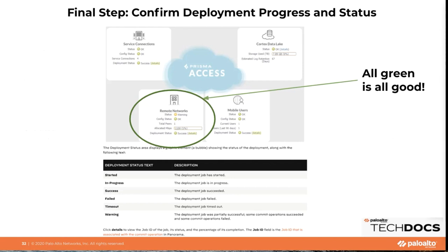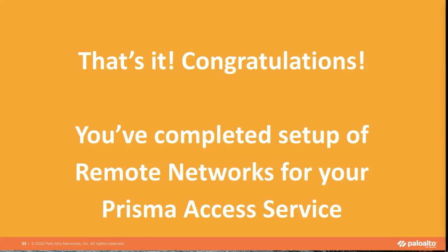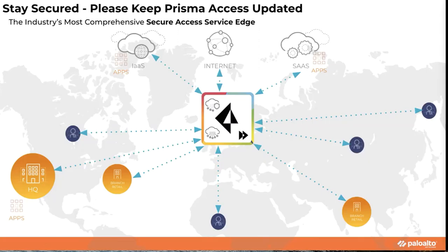To confirm your deployment progress, log into Panorama, go to status in the cloud services tab, and verify that network status is green, config status is green, and platform status is successful — this means you have successfully onboarded your remote networks. If it shows amber or a warning sign, click to see further details about the error, such as a tunnel being down, out of sync, or other issues. That's it for onboarding a remote network. I'll hand it over to Anil.